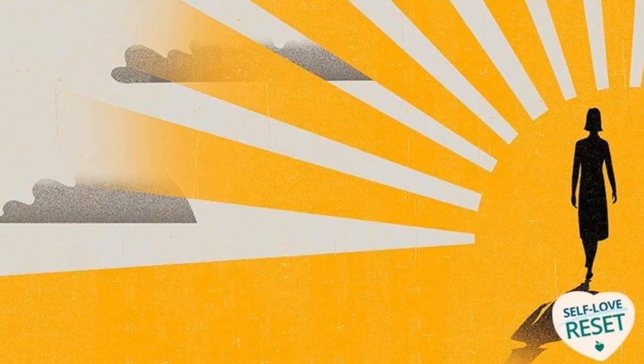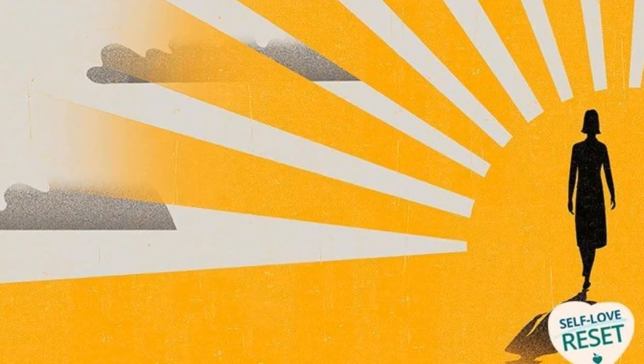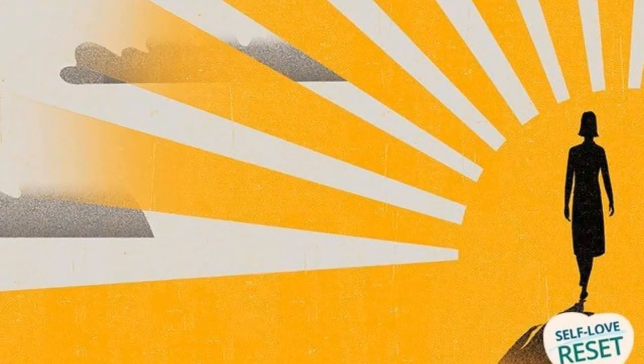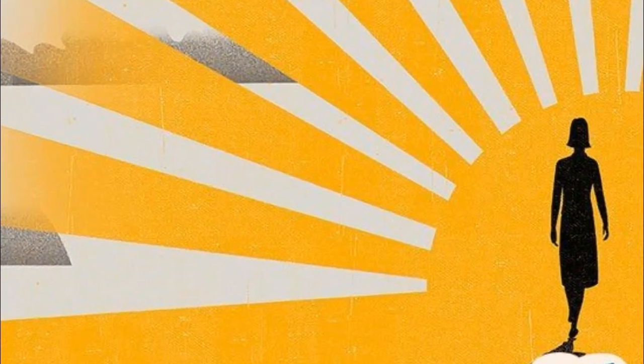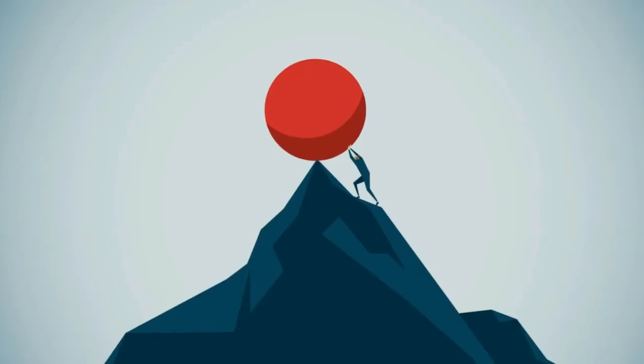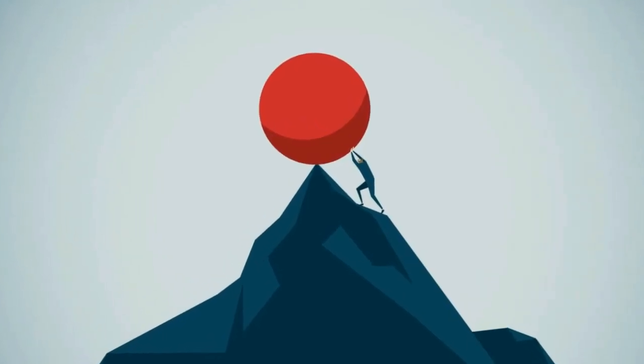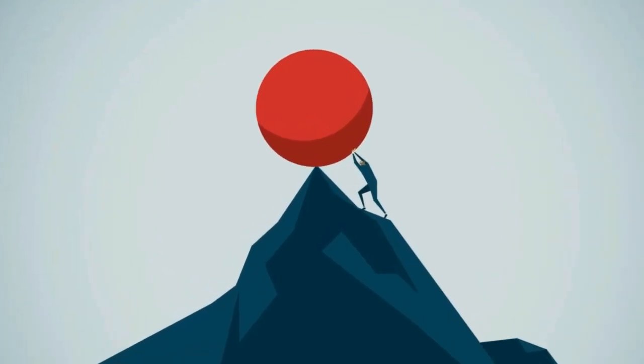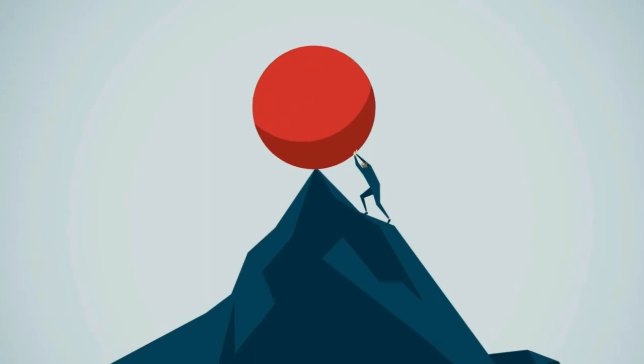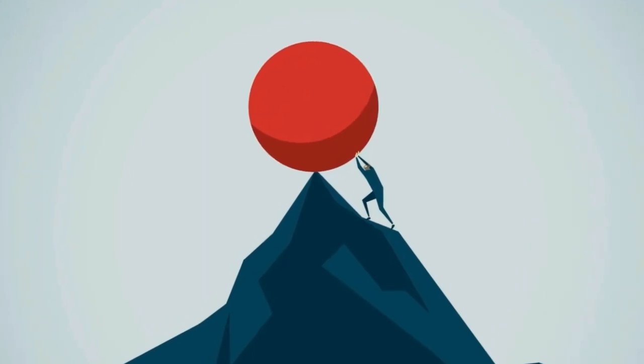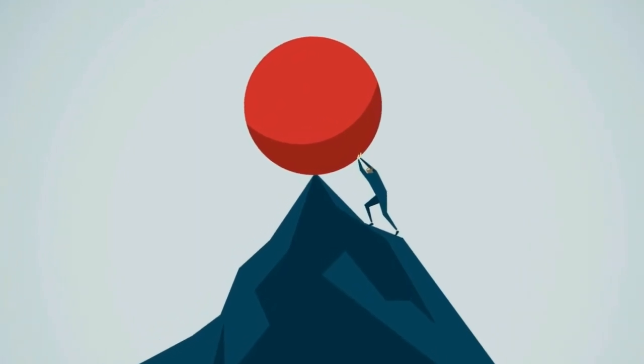4. Coping. Compensating for emotions and stressors is the fourth aspect. 5. Competence. The fifth aspect is skill development, which involves developing all kinds of skills.